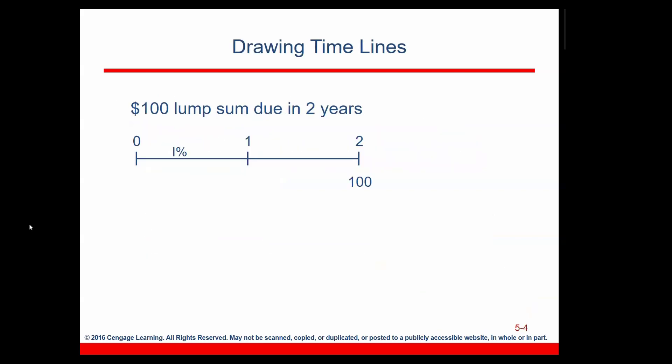How can we draw timelines? Well, the timelines are drawn depending on the problem. So in this problem, we are going to receive $100 lump sum due in two years. So we draw the timeline first, which is going to be two units long. Every single unit is going to represent one year. And at the end of the two years, I'm going to write $100 below the number 2.